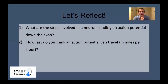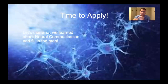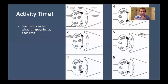An action potential can travel 580 miles an hour. If a car is going on the highway at 50 miles an hour, the action potential is going 10 times faster than that car — pretty unbelievable. And how many neurons do you think you have in your whole body? It is 86 billion. So we have more diagrams here, and we're going to apply what we learned about neural communication in this map.